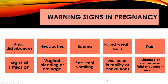We don't wait for the next doctor's appointment for these warning signs — we go to urgent care, a hospital, or a birth center. Other warning signs include vaginal bleeding or drainage, persistent vomiting, muscular irritability or convulsions, and absence or decreased fetal movement once felt. If you have been feeling your baby move and now aren't, the baby is conserving energy and under stress — we need to get to a facility for a non-stress test or biophysical profile immediately.